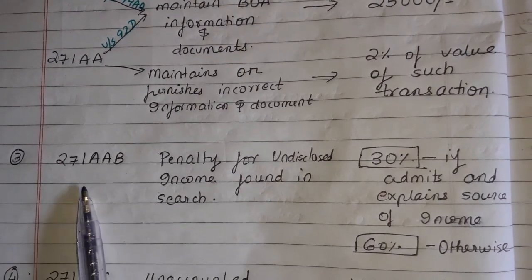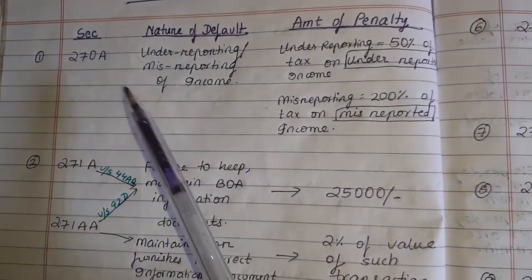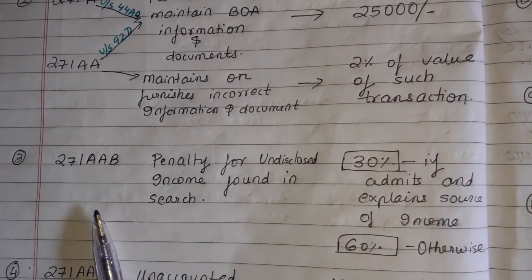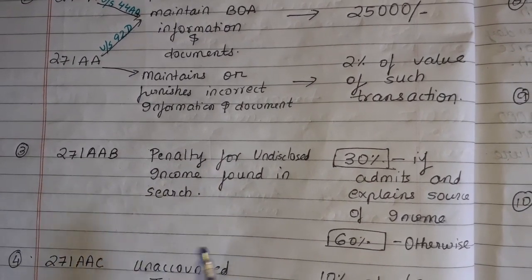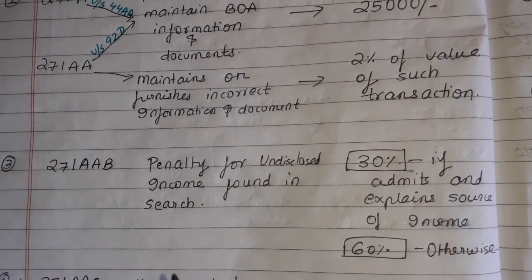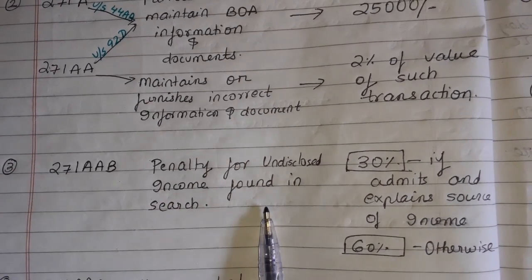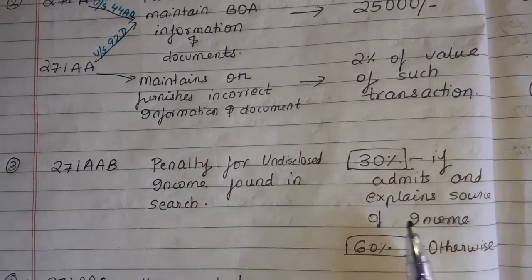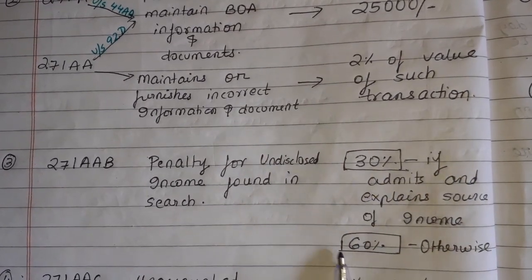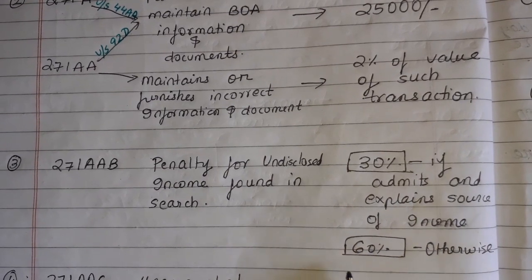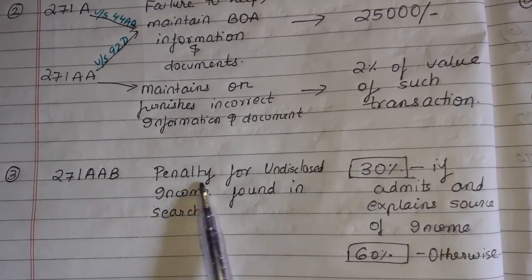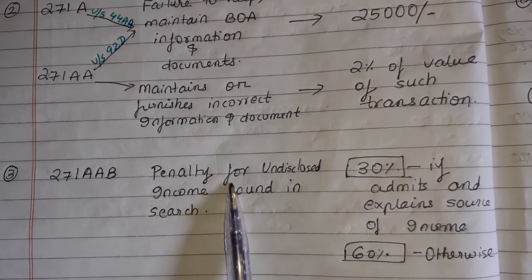Next, number 3: Section 271AAB — Penalty for Undisclosed Income Found in Search. When a search is conducted and income that was not disclosed is found, if the assessee admits that yes, they had this income and explains the source, the penalty will be 30%. Otherwise, if they don't admit the income or can't explain the source, it is 60%. So simply: 30% and 60% — remember these two slabs for search cases.